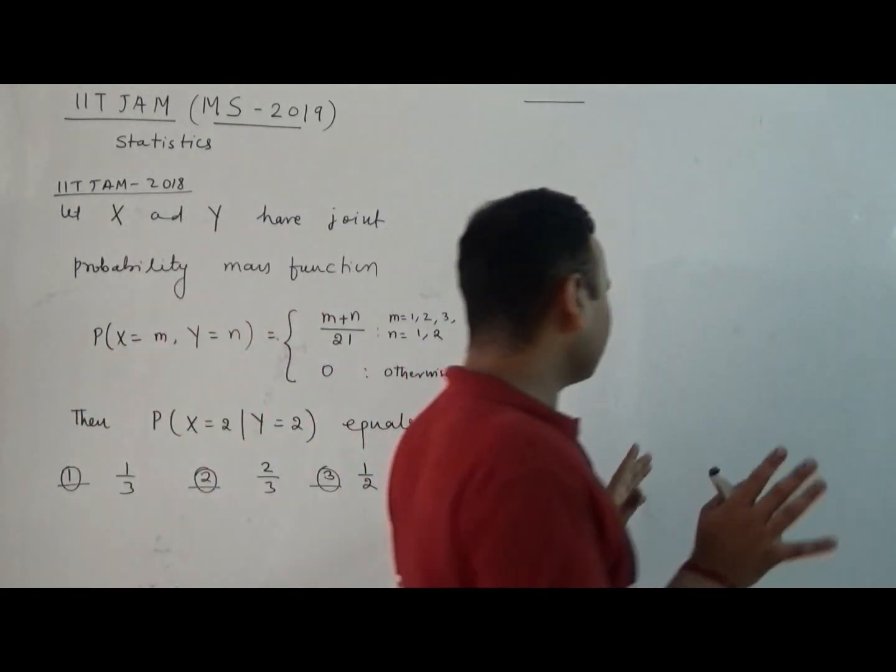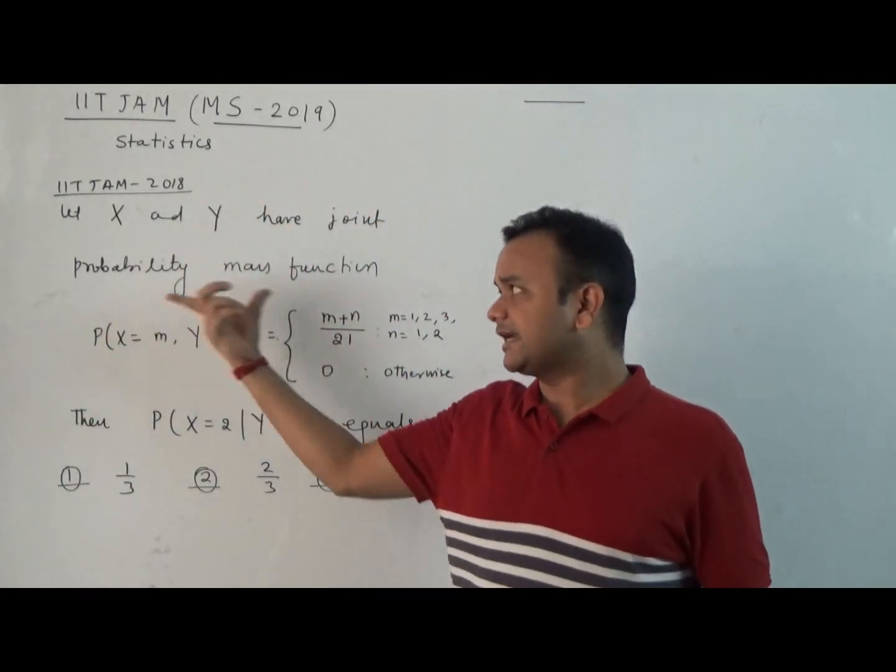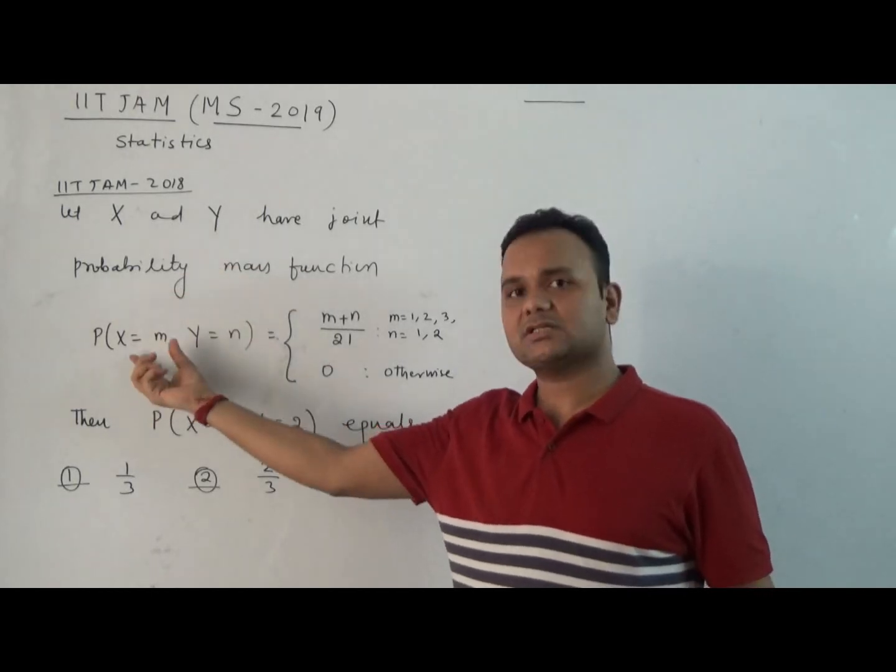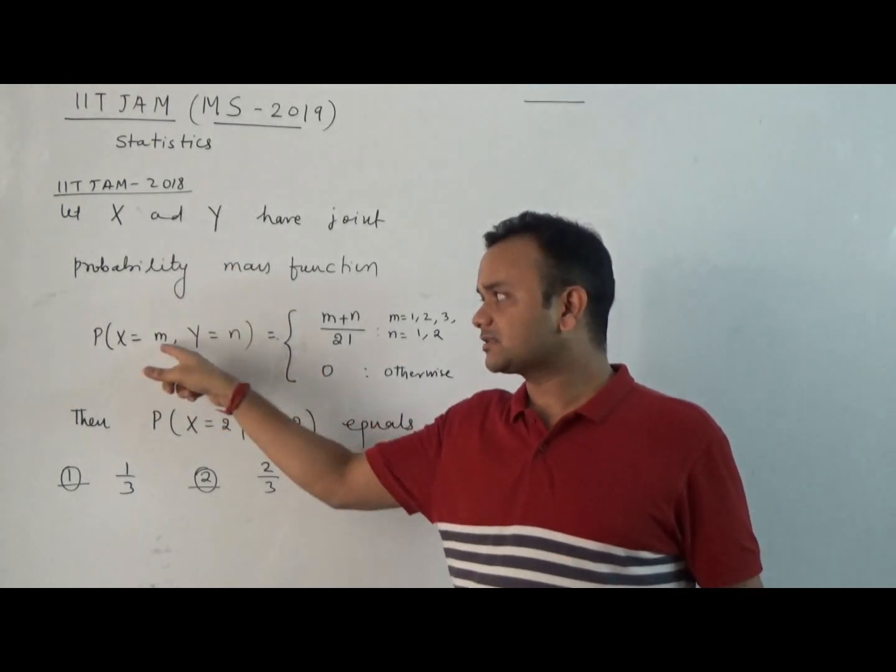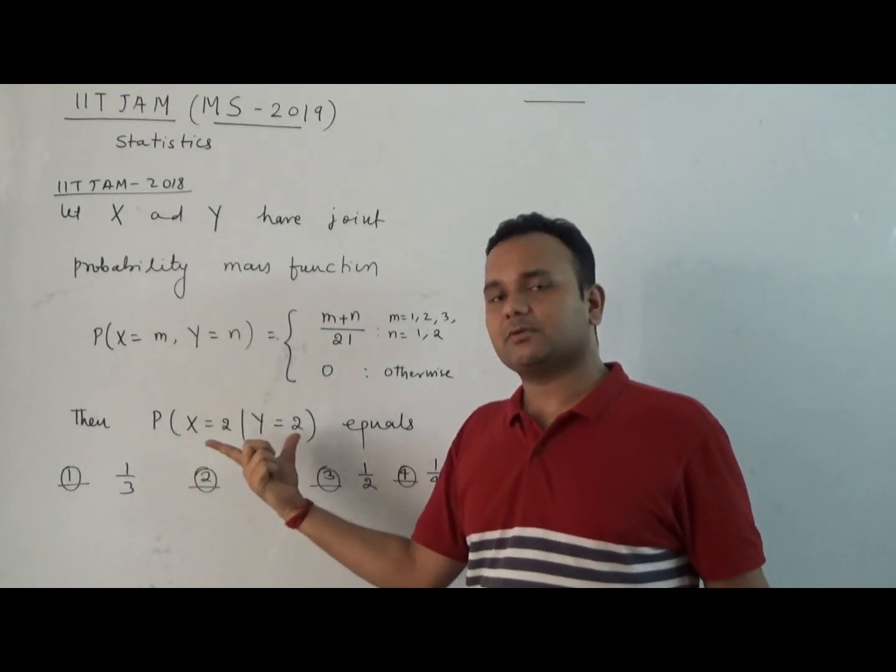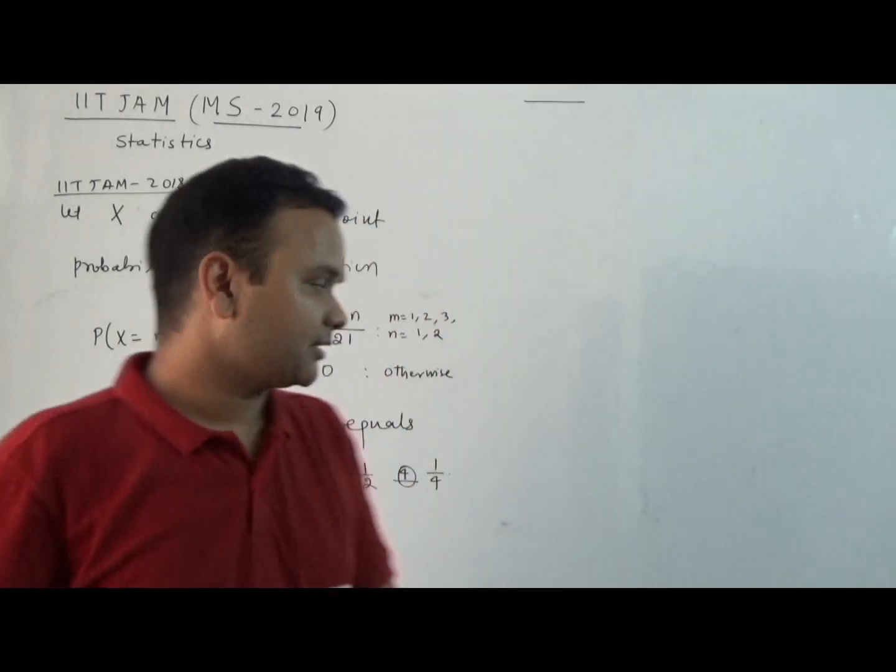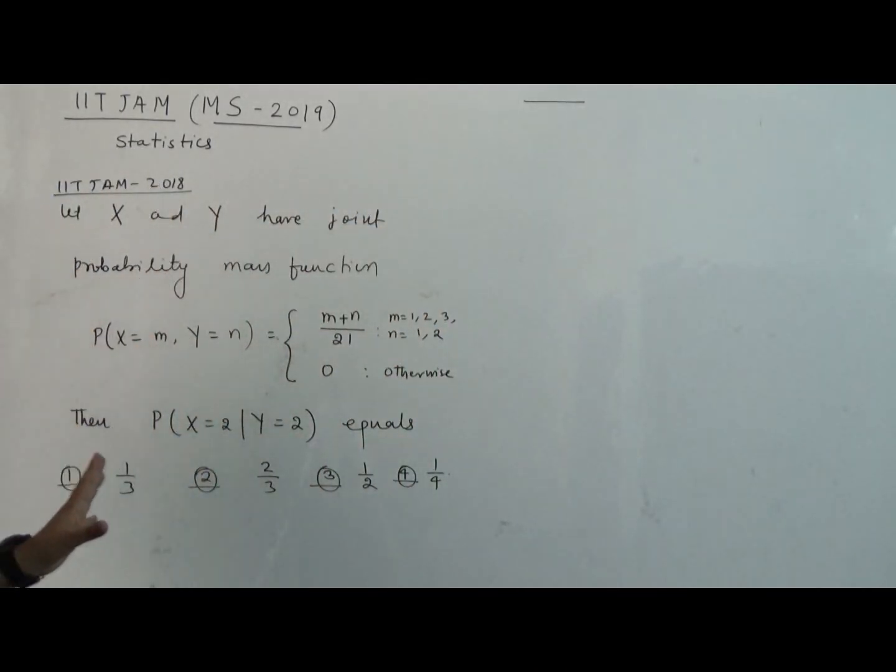The question is very straightforward, very simple. X and Y are given as random variables and their joint probability mass function is defined like this. They are asking for the conditional probability, finding the probability of X equal to 2 given Y equal to 2.